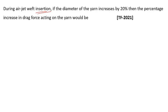During air jet weft insertion, if the diameter of the yarn increases by 20%, the percentage increase in the drag force acting on the yarn would be what? The drag force is the force that acts on the yarn and pushes it forward. If you know the air jet weft insertion system, drag force equals pi × D × L, where D is the diameter and L is the length. So drag force is directly proportional to the diameter of the yarn.